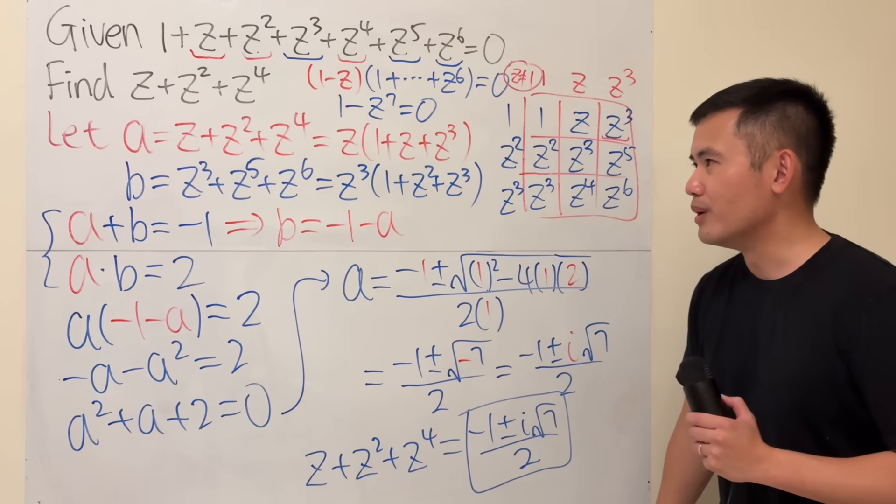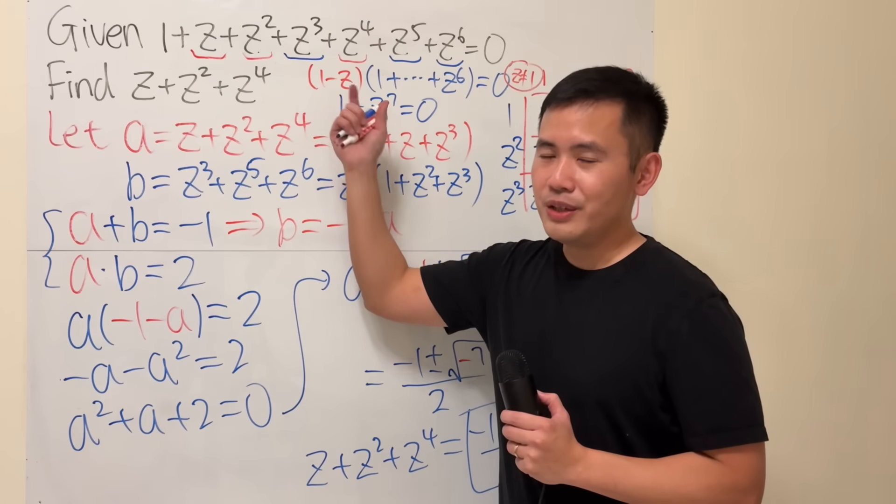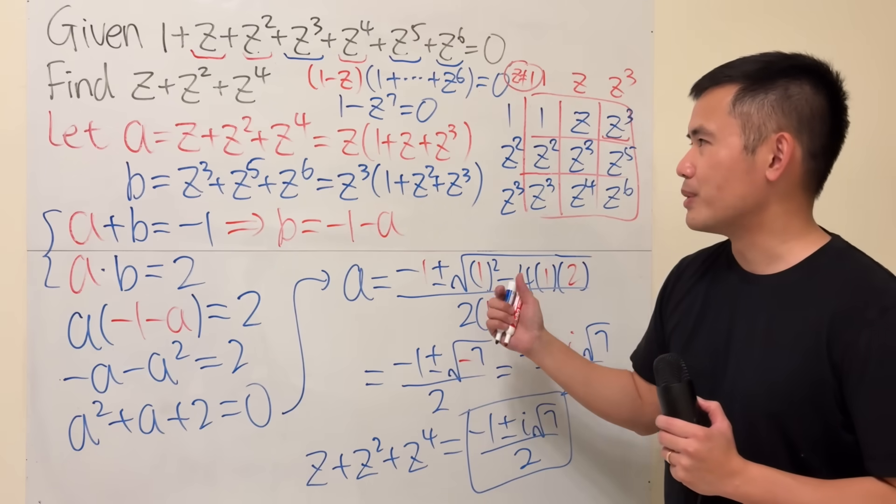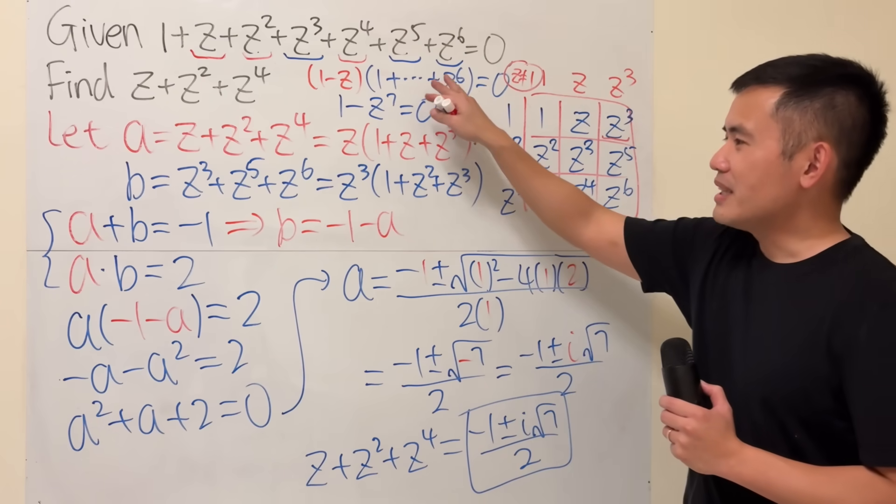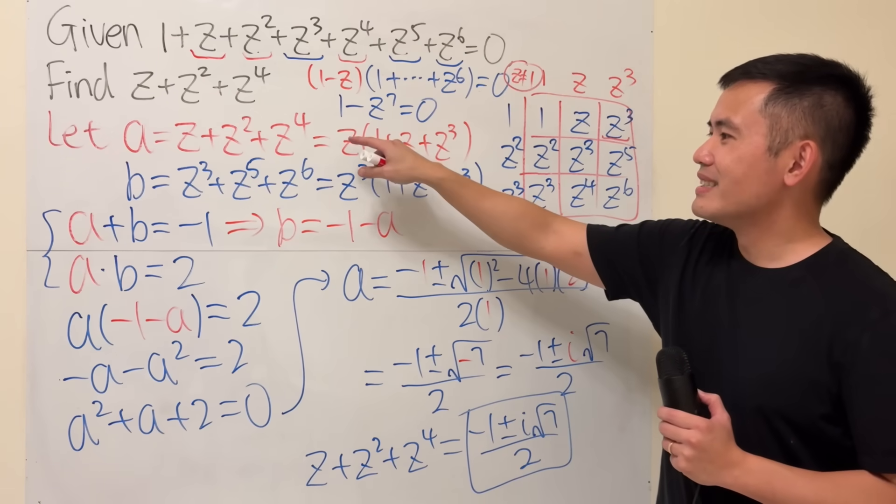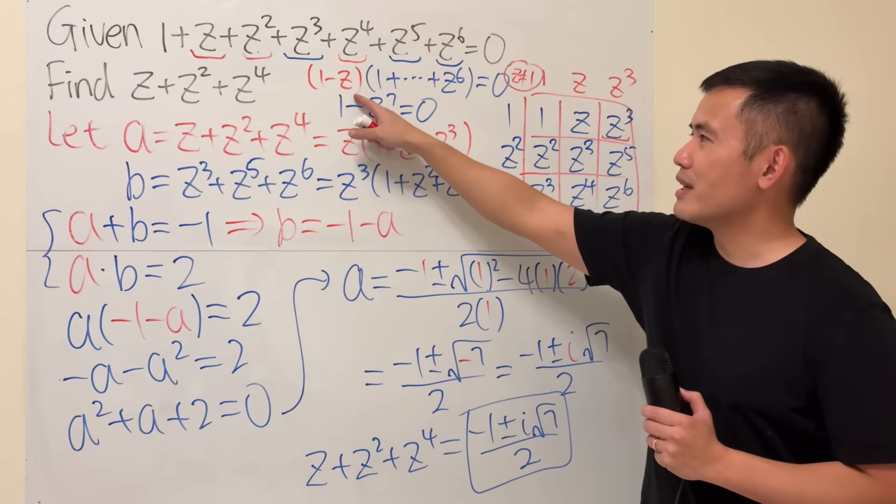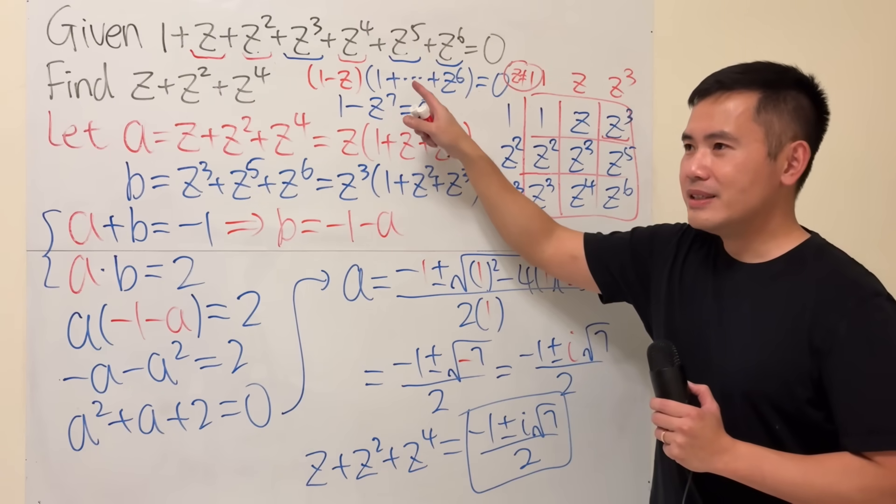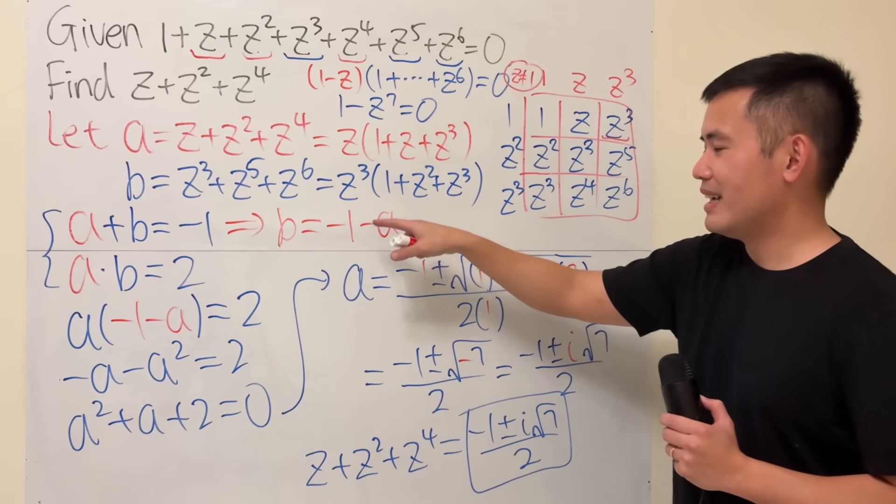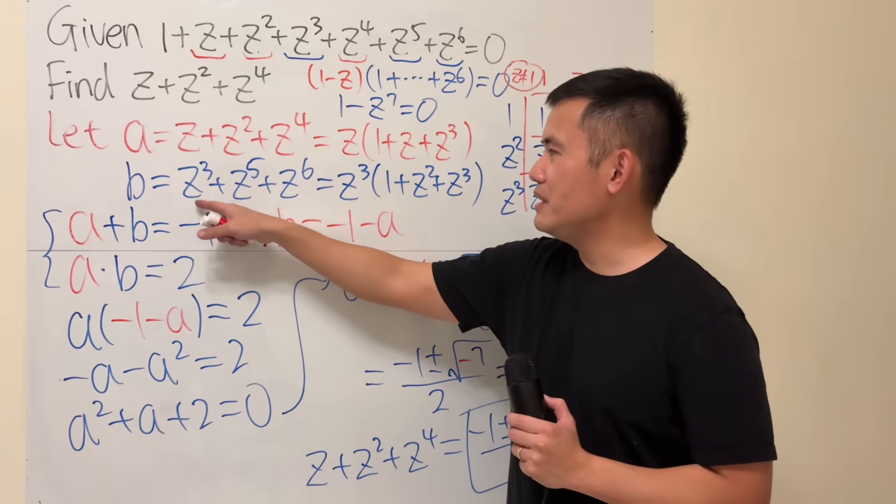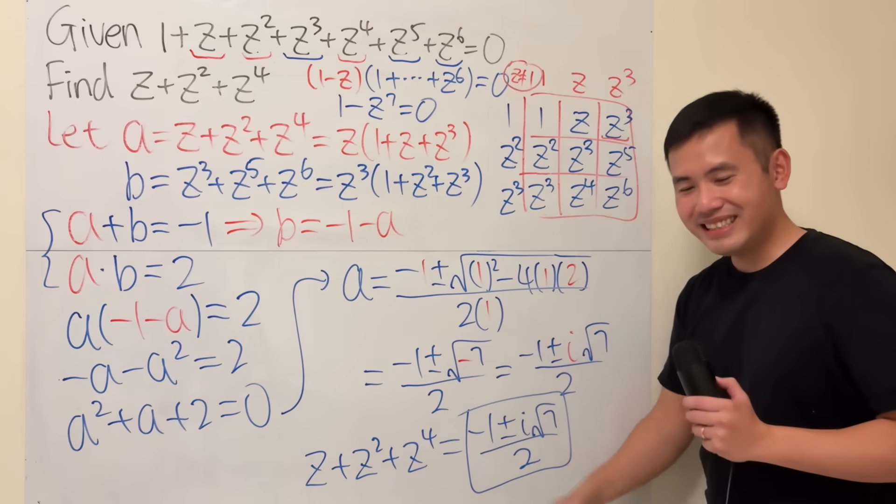This is super cool because you didn't need to solve for z. You really need to know how to work out the algebra. Plus, just a lot of different things right here, right? And how you break it down and plus the 7th root of unity. And you can also find out what b is if you would like. So, yeah. That's it.